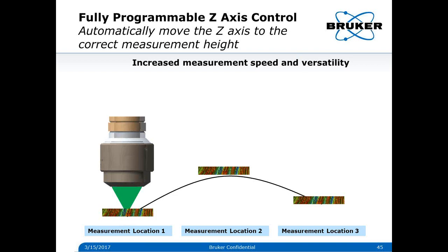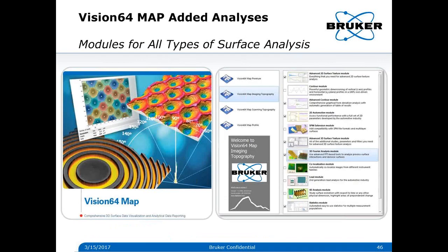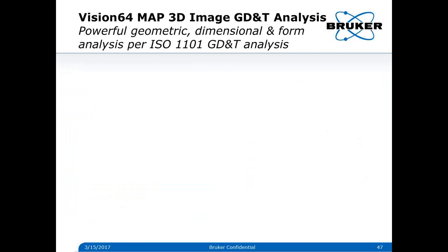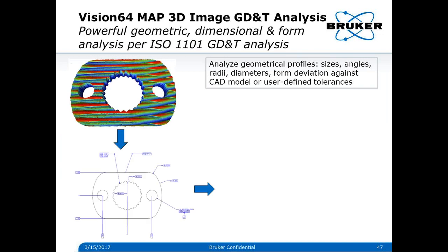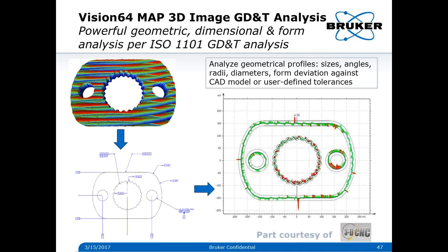We now have Vision Map, which we combine with MountainsMap software by DigiSurf for added analyses enhancing the current analyses on the system. MOTIF analysis is one of the big ones where we can do various surface analyses. One that's been very popular is GD&T analysis, where we can take a 2D contour out of a part — here's a dental bit where we pull out a 2D contour, compare it to the print, and show all deviations. So along with measuring the surface finish of this part, we're also doing a GD&T analysis of how well it conforms to the print.